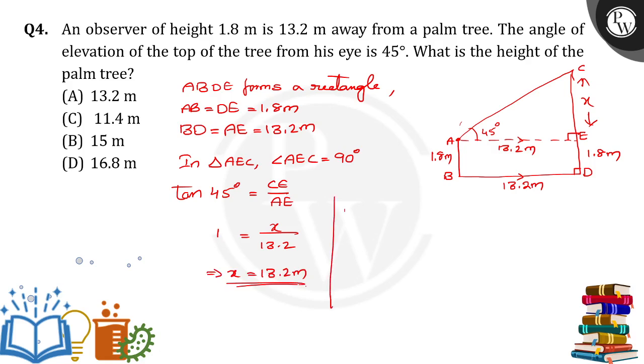Now we have to find the height of the palm tree. Height of the palm tree is nothing but CE plus ED. So CE is equal to X plus 1.8. What is the value of X? 13.2 plus 1.8. By adding, we will get 15 meter. So this is the total height of the palm tree. Option B is the right answer.